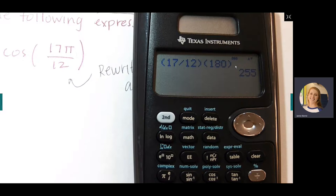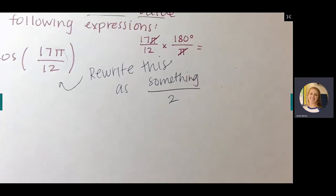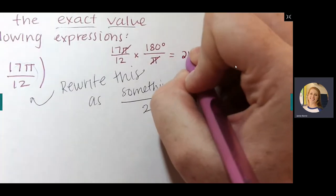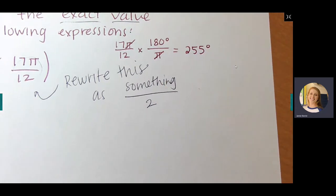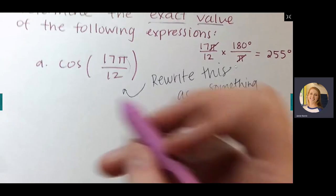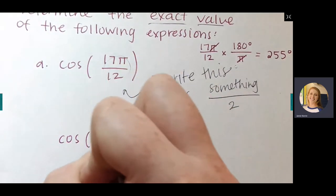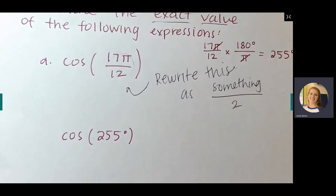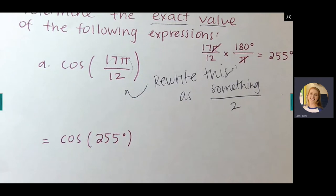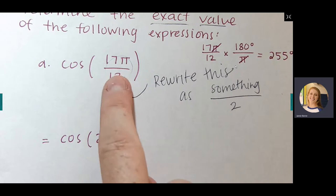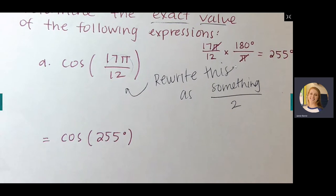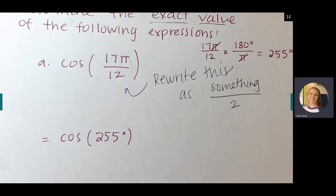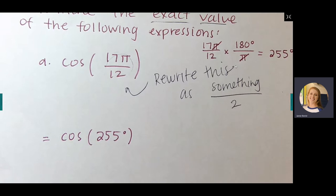Check your unit circle: 255 degrees is not on there, which tells us again that we need to use either a double-angle or half-angle formula. We're going to do the half-angle on this one. Working in degrees is going to make it easier because we're more used to working with degree form — radians are less natural for us.